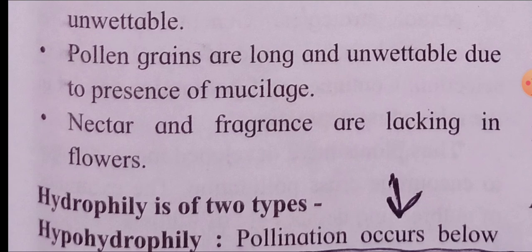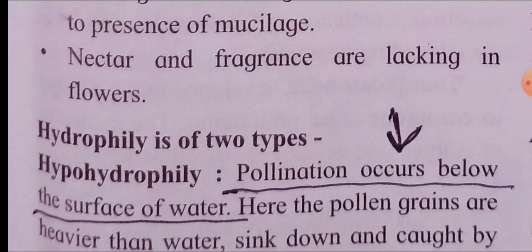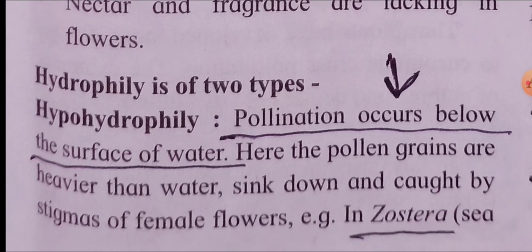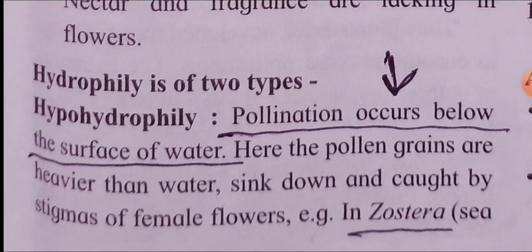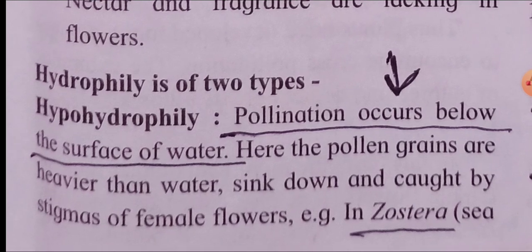These flowers have no nectar or fragrance, because water and wind as abiotic agents don't need to attract any living creatures. Hydrophily is of two types. One is called hypo-hydrophily — 'hypo' means below — pollination occurring below the surface of water.